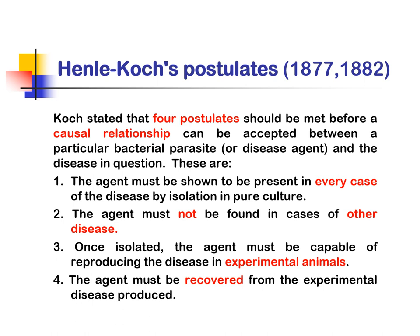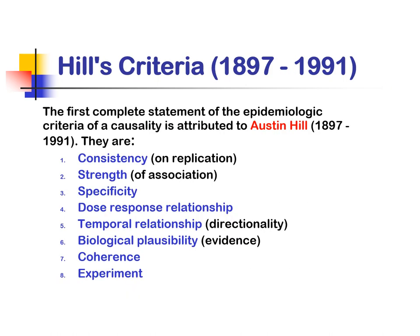These are Koch's postulates. Four postulates should be met before a causal relationship can be accepted between a particular bacterial parasite and the disease in question: the pathogenic agent must be shown to be present in every case; it must not be found in cases of other diseases; once isolated, the agent must be capable of reproducing the disease in experimental animals; and the agent must be recovered from the experimental disease produced.